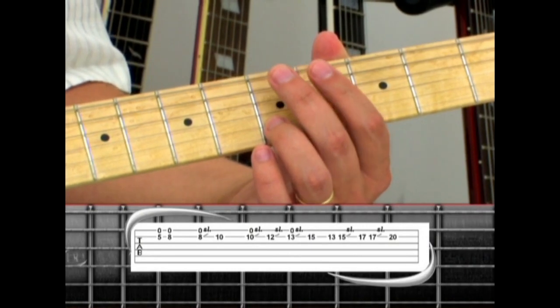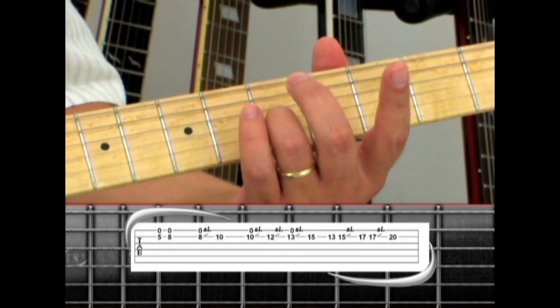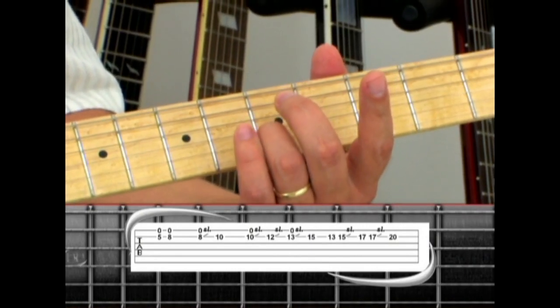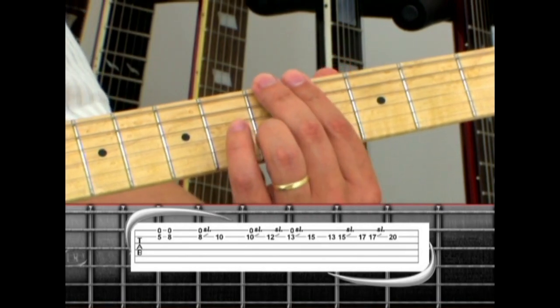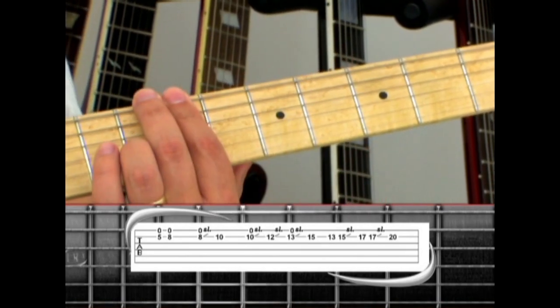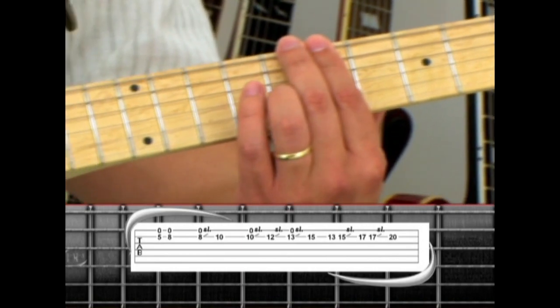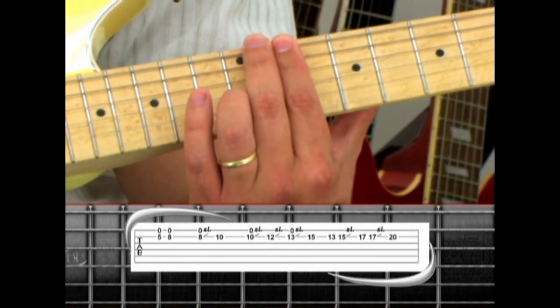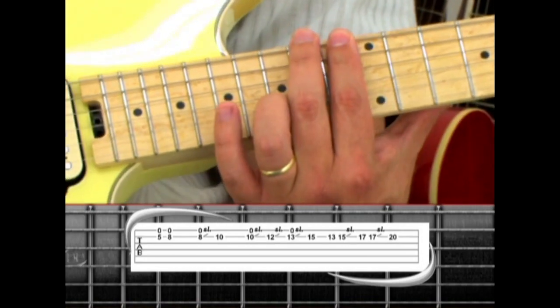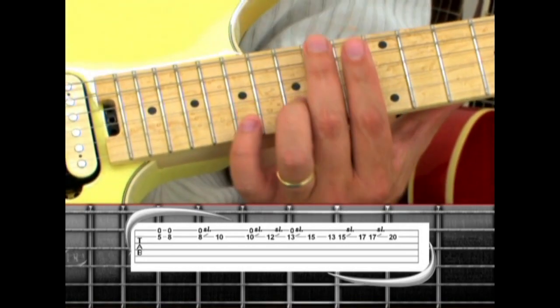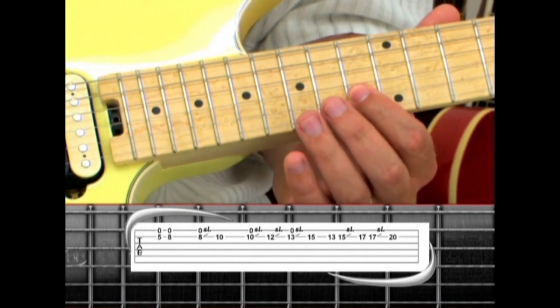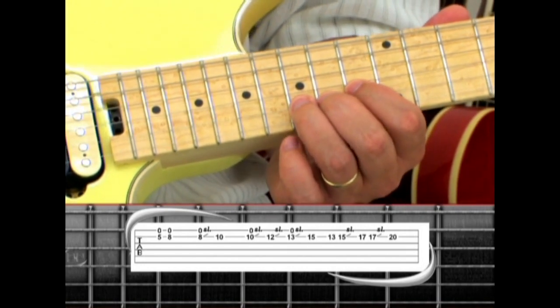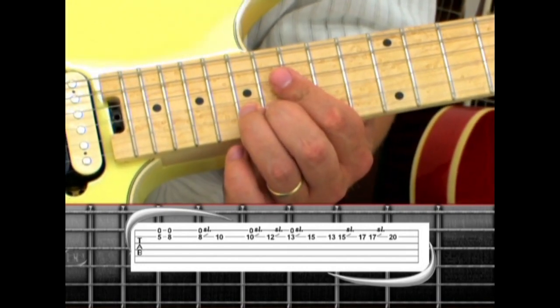Phrase six uses the same structure with open first string drone notes along with second string fretted notes. Five, then eight. Eight slide to ten. Ten slide to twelve. Thirteen slide to fifteen. Next is a group of single notes on the second string thirteen, then fifteen slide to seventeen. Seventeen slide to twenty.